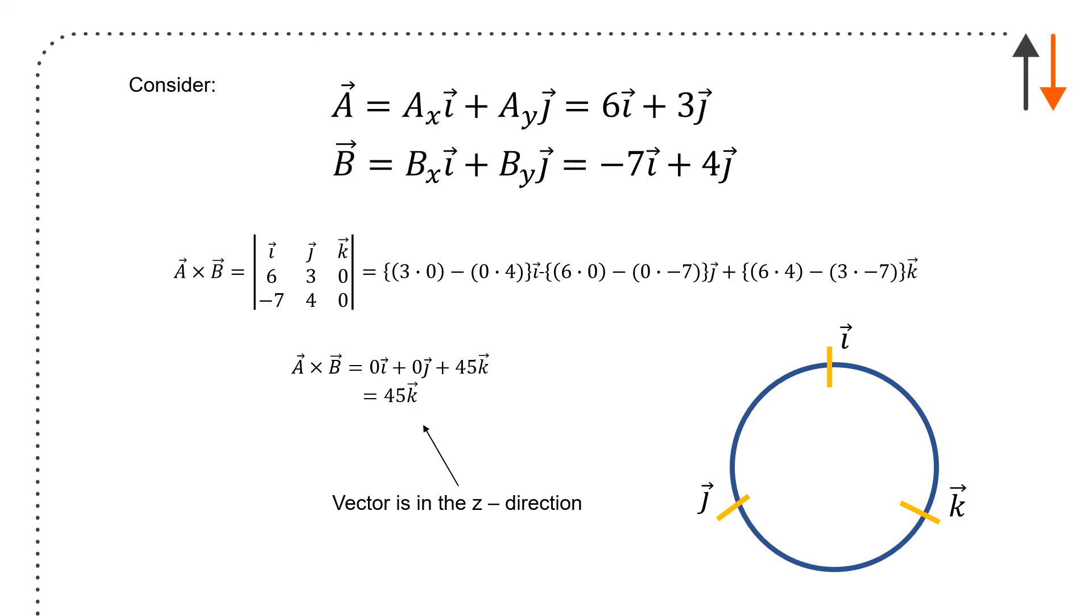Now, if you have a quantity like 6I plus 3J, just putting some numbers down, I can put all of these together, and I get minus 7I plus 4J. I get 6, 3, 0, because K is 0 in this case, minus 7, 4, 0. And I will get all of these terms. Now, the interesting thing, and this is something you'll see a lot in the course, is that the I and J components go to 0, but the K component remains. And so that's the only one that's there, and it's 45. And it's in the Z direction.